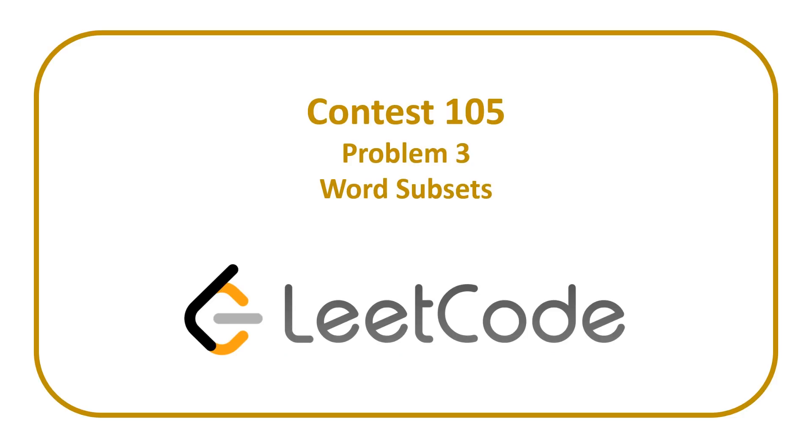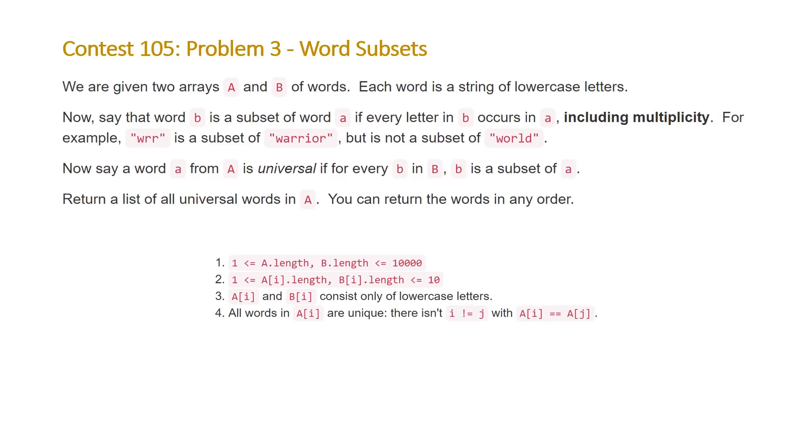In today's video, we're going to be covering the solution to problem three from the LeetCode contest 105 problem entitled Word Subsets. The problem states we are given two arrays A and B of words. Each word is a string of lowercase letters. Now, say that word B is a subset of word A if every letter in B occurs in A, including multiplicity. For example, wrr is a subset of warrior but is not a subset of world.